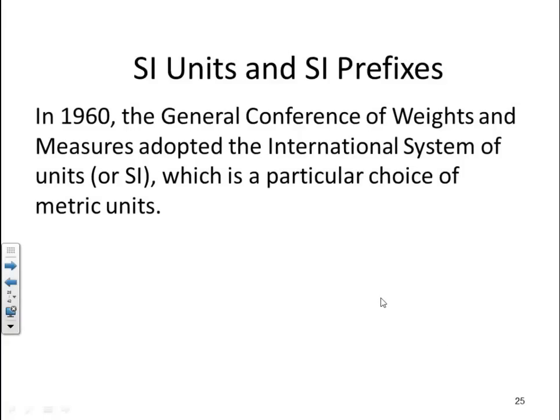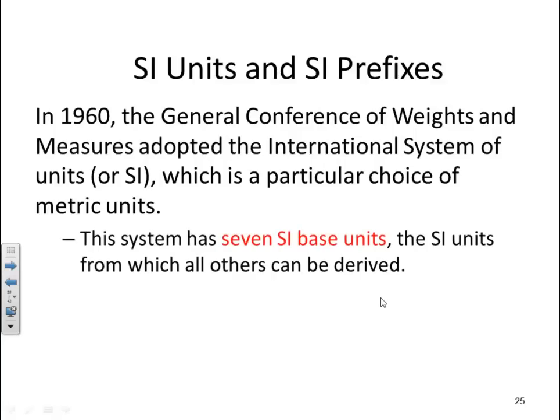In 1960, the General Conference of Weights and Measures adopted the International System of Units, or SI, which is a particular choice of metric units. This system has seven SI base units, the SI units from which all others can be derived. So there are seven main units, the rest of them are derived from the seven base units.